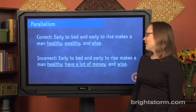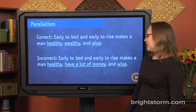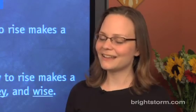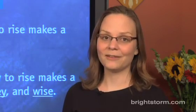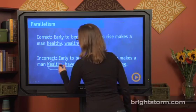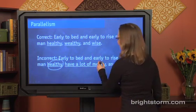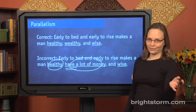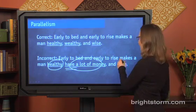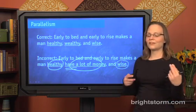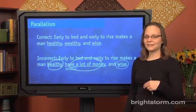Let me show you what that would look like without parallelism. Early to bed and early to rise makes a man healthy, have a lot of money, and wise. It has the exact same meaning, but it is not parallel. Let's talk briefly about why. Healthy is an adjective. Have a lot of money is something called a verb phrase — that means it's a verb, the word 'have', followed by some other words. And then wise is an adjective again. So because we're mixing and matching parts of speech — adjectives and verb phrases — it's not parallel.